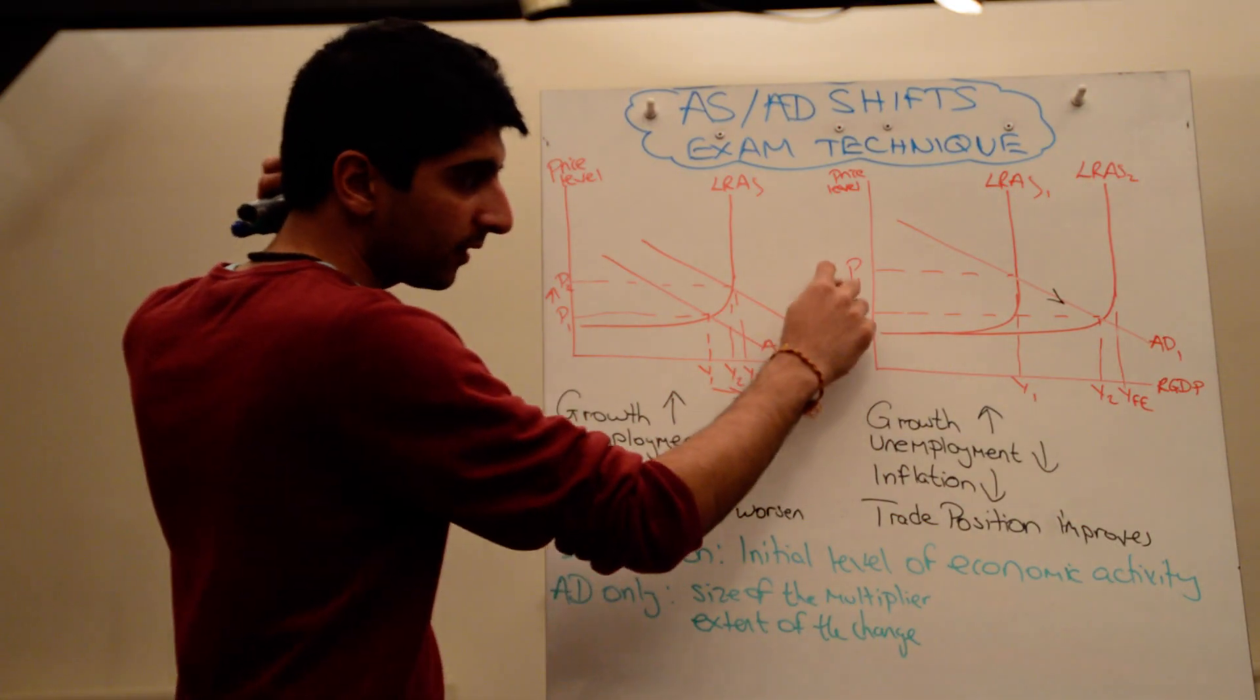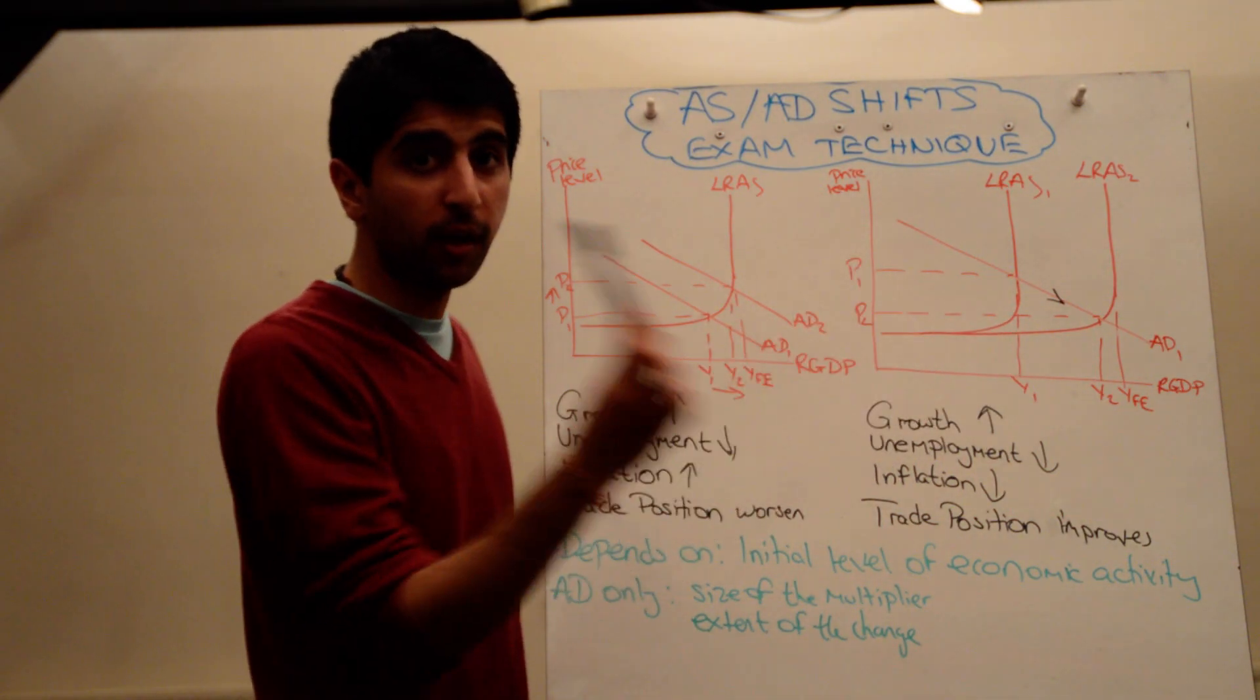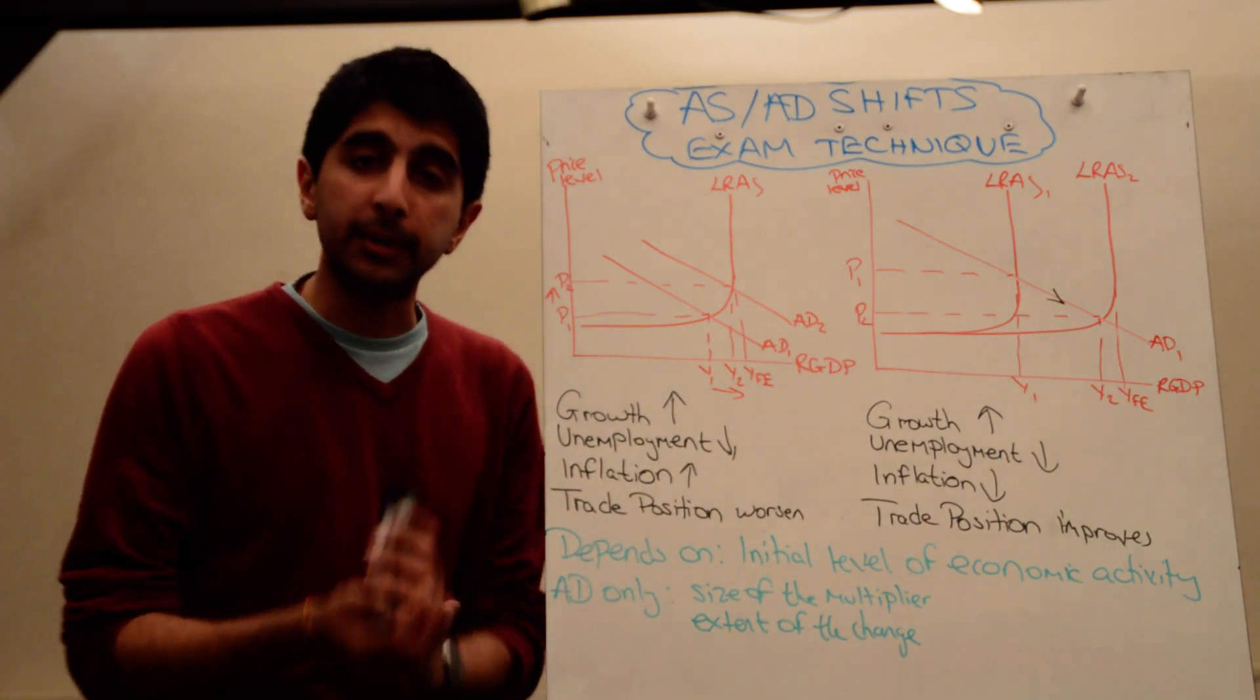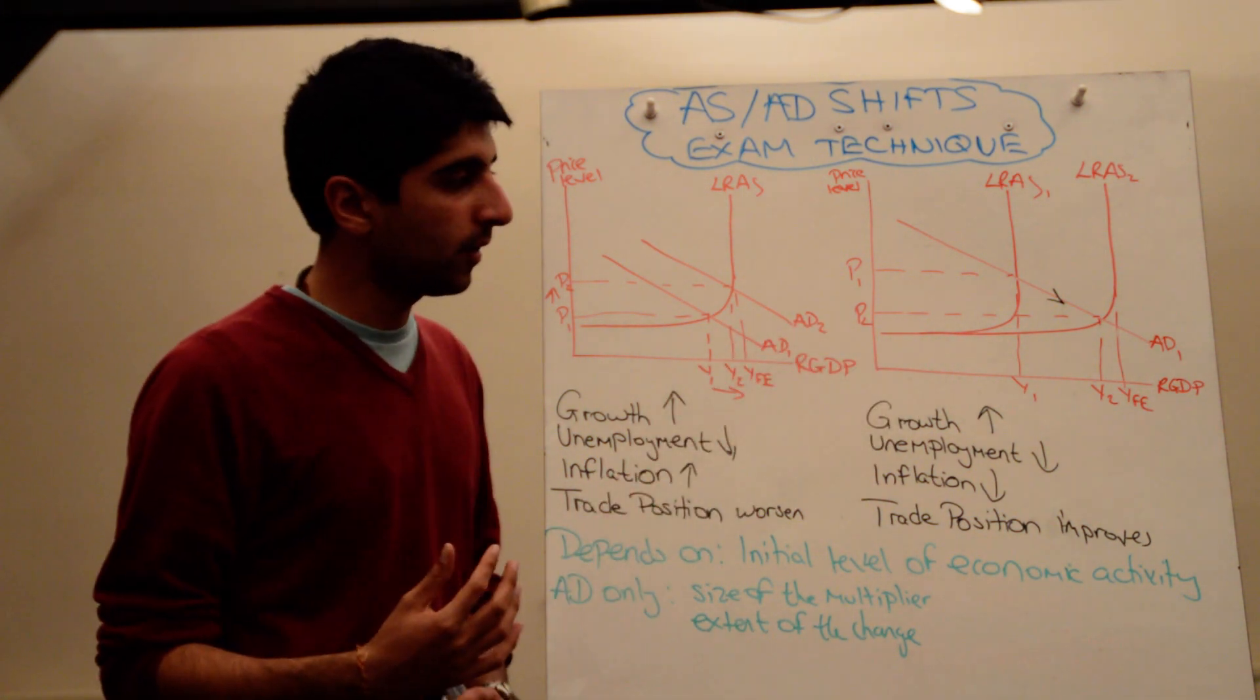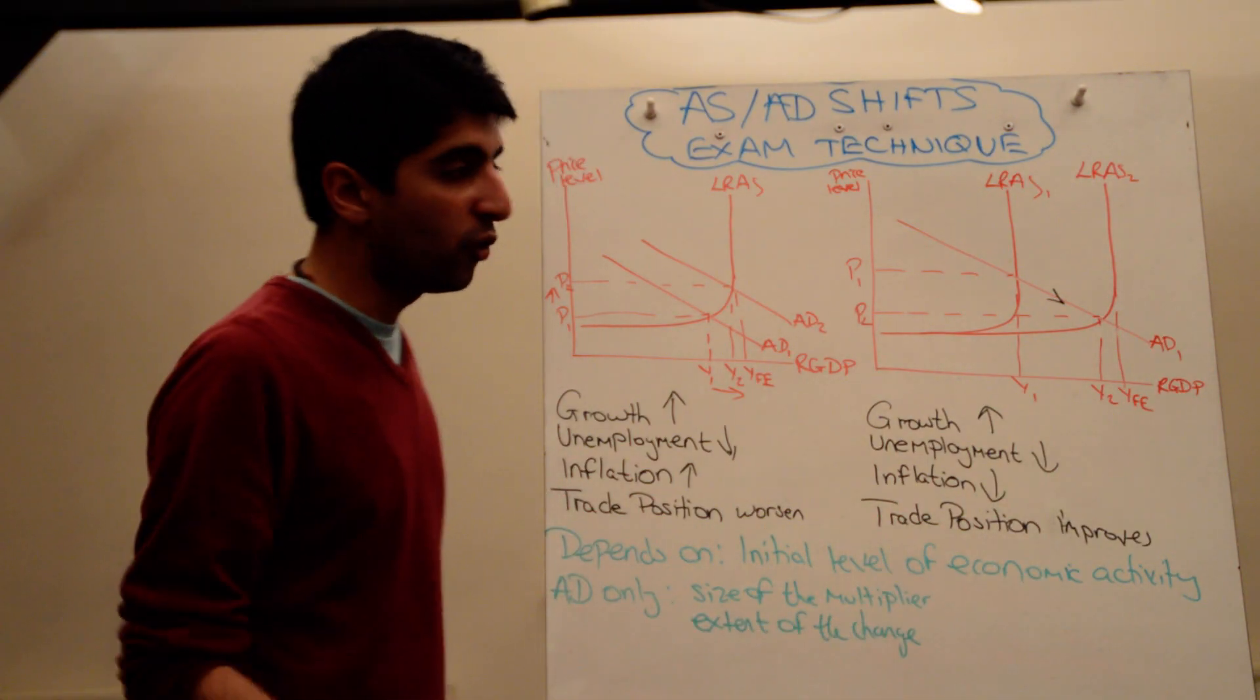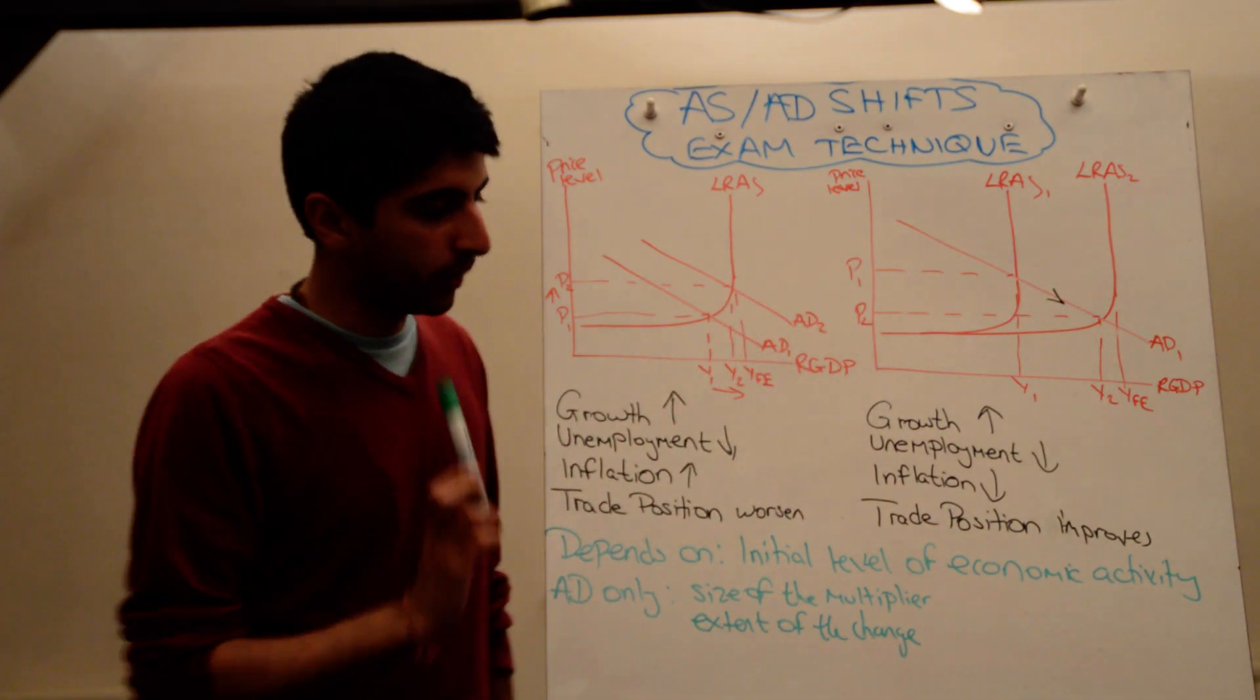Inflation in this sense, it reduces because there is less competition for goods and services. So when aggregate supply shifts to the right, you need to explain the reduction in inflation in terms of reduced competition for goods and services. So now, because there is reduced competition for goods and services, overall that leads to reduced cost-push inflationary pressures. And trade position improves because now exports become relatively more competitive as the price level of the economy actually falls. That's what we explained.